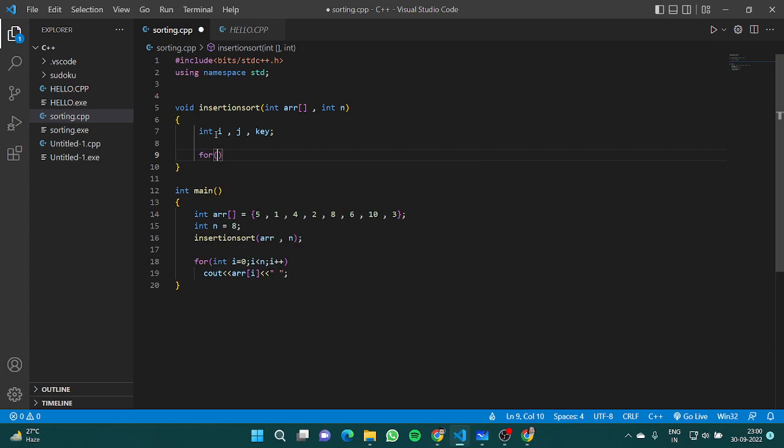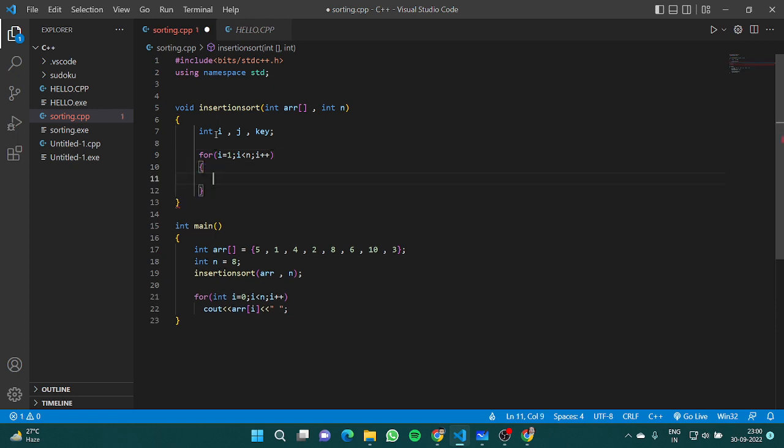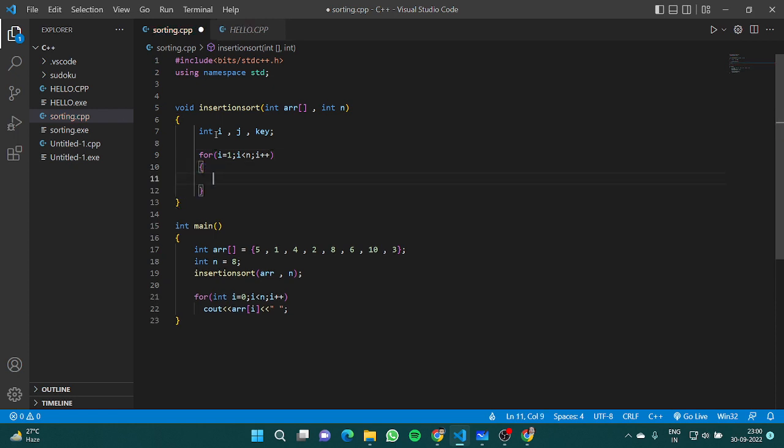Let's have a for loop: for i equals 1, i less than n, i++. We will have a key which will be equal to array[i]. We have to place key at its correct position in the subarray before it.